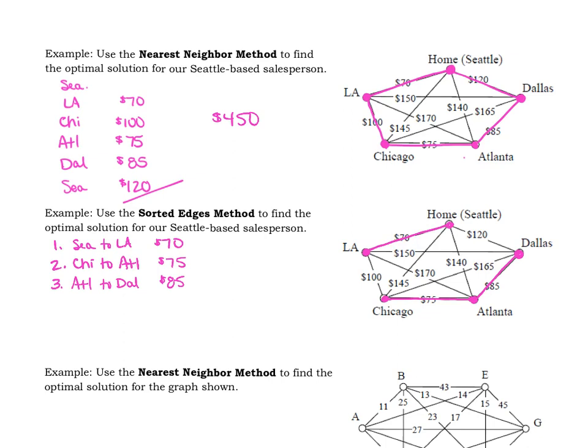And now we've got that edge added in to our graph. And we keep repeating this process. So we find the next cheapest edge that hasn't been used. That's the $100 between LA and Chicago. Are we breaking any rules? Are we creating a circuit that doesn't visit all vertices? No, we're not creating a circuit at all. And are we going to create a vertex? The ones that are highlighted that has degree three? No, we're not. And so we can add that $100 edge there from LA to Chicago for a hundred bucks.